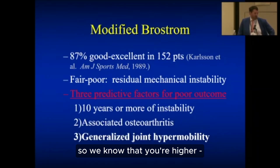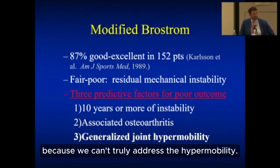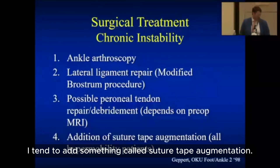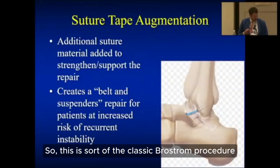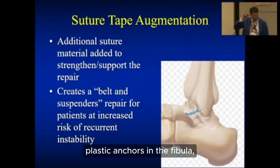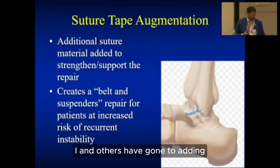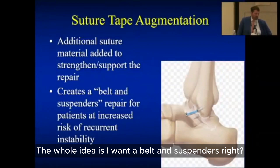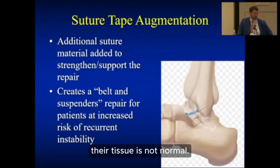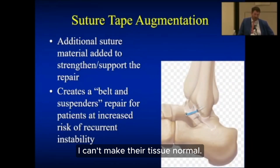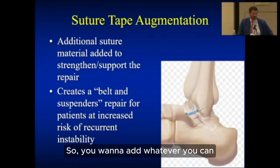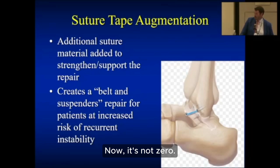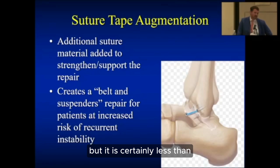We know from the literature that the three predictors of poor outcome with the modified Brostrom — tightening the lateral ligaments — are 10 or more years of instability, associated arthritis, or generalized joint hypermobility. My EDS patients typically fit all three. So I add suture tape augmentation — basically an additional band of suture running from the fibula to the talus, that little blue thing in the cartoon. It's a belt-and-suspenders approach because EDS tissue is not normal and will stretch out. This has anecdotally made a big difference in reducing recurrence, though it's never zero.